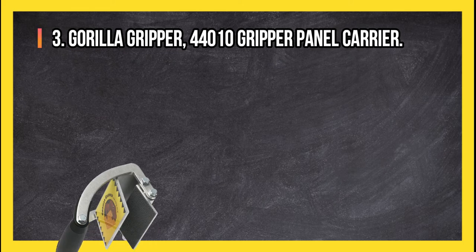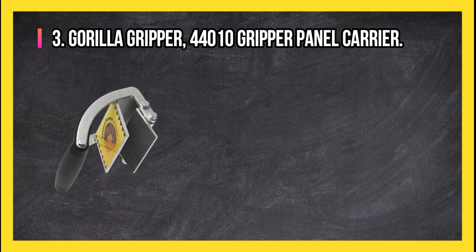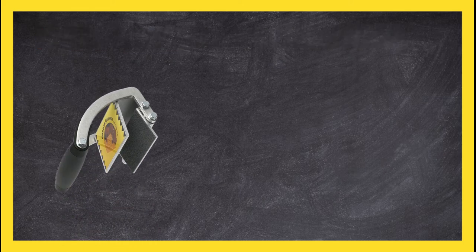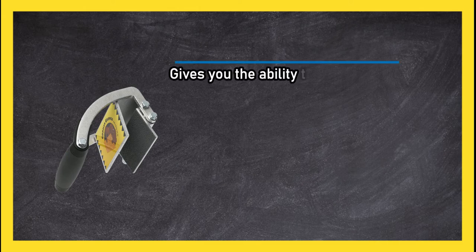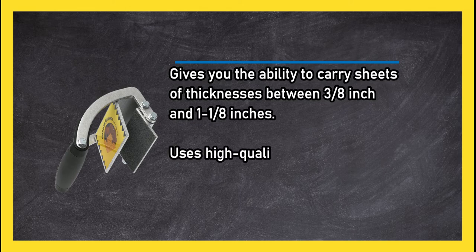At number 3, the Guerrilla Gripper 44,010 Gripper Panel Carrier. Gives you the ability to carry sheets of thicknesses between 3/8 inch and 1-1/8 inches.